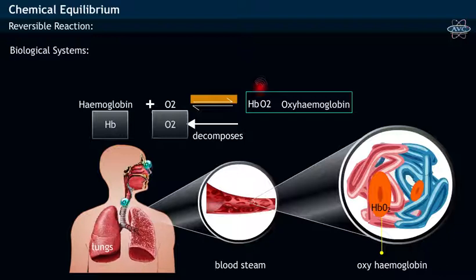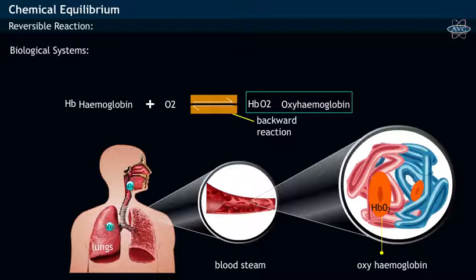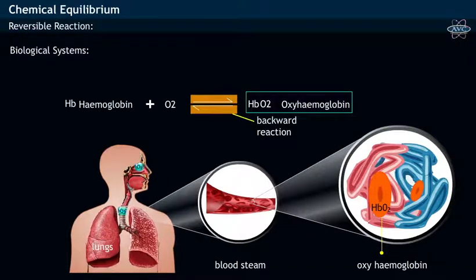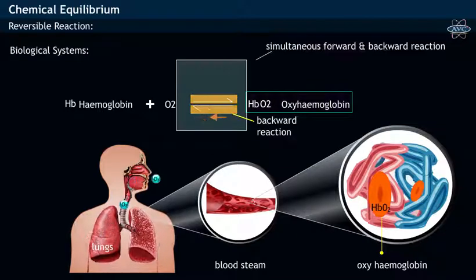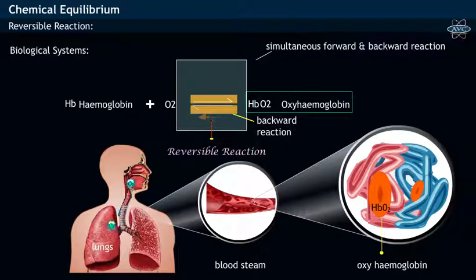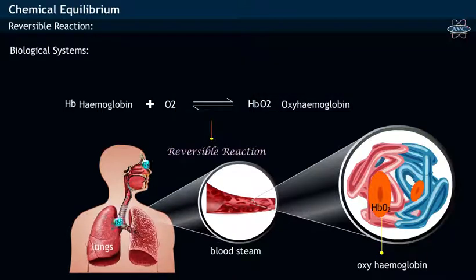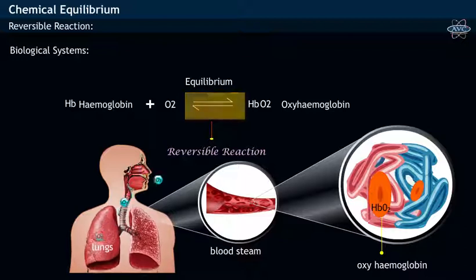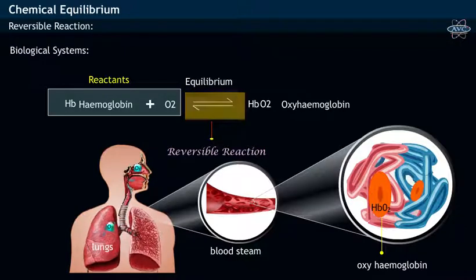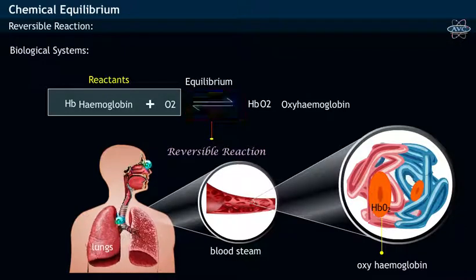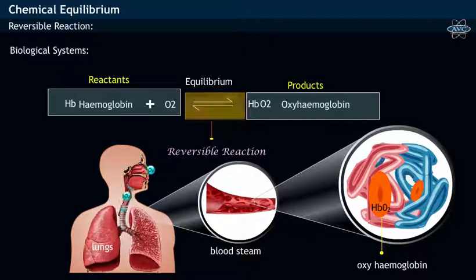That is, a backward reaction occurs. In the breathing process, since both forward and backward reactions occur simultaneously, it is said to be a reversible reaction. It may be noticed that there exists an equilibrium, shown as a double-headed arrow, between reactants hemoglobin and oxygen and the product oxyhemoglobin.